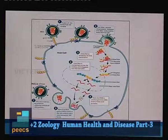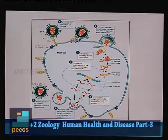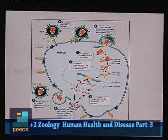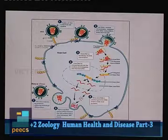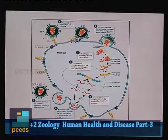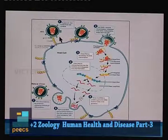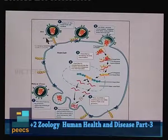HIV undergoes replication by selecting host cells that have specialized receptors — usually CD4 receptors. Macrophages and T helper cells have CD4 receptors and are the usual host cells for HIV. HIV undergoes replication within these host cells. GP120 on the viral surface is involved in binding with the CD4 receptor.